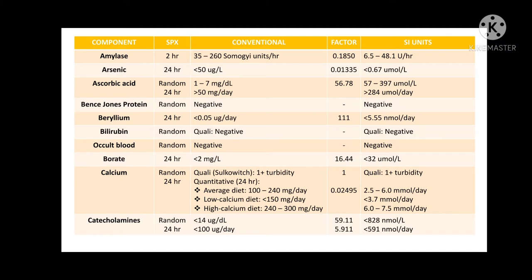For calcium, when you use random urine specimens, you can test them qualitatively using the Sulkowicz method and detect for the presence of turbidity. If you use 24-hour urine samples, that can be done quantitatively. With an average diet, the expected result is 100 to 240 milligrams per day. With a low calcium diet, expect less than 150 milligrams per day. With a high calcium diet, expect 240 to 300 milligrams per day. Use the conversion factor 0.02495 and multiply the conventional values to get your SI unit values.